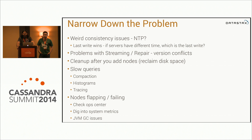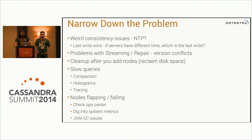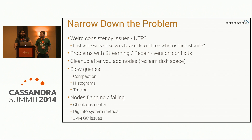You can run into problems with streaming and repair if you're not using the same version of Cassandra across your cluster. When we were at our last company, we thought we'd be clever and upgrade from 1.1 to 1.2 by adding new nodes and taking out the old ones. But streaming doesn't work across major versions, and it went terribly wrong — it took us a couple days to figure out how to get the new node out of the cluster. Fortunately the cluster never went down, but it was hard to understand what was going on. Just make sure you're on the same version all the time, and if you're going to upgrade, just do that one thing.